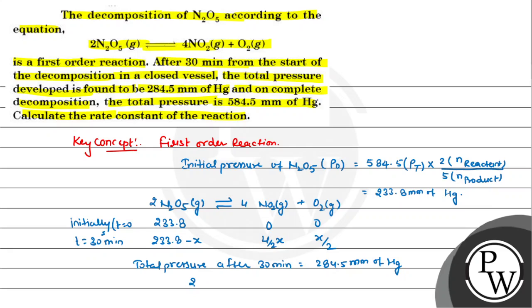This will be 233.8 minus x plus 2x (4 by 2 gives 2x) plus x by 2. So this equals 284.5. The value of x comes out to be 33.8 mm of Hg.